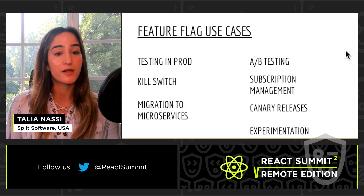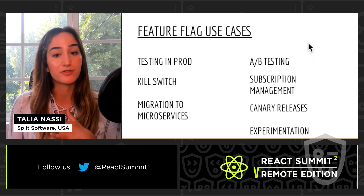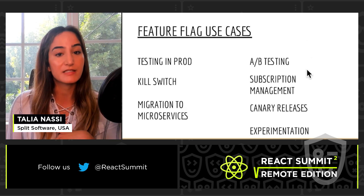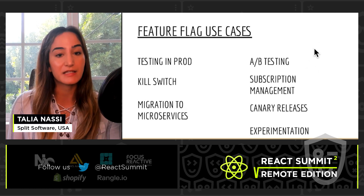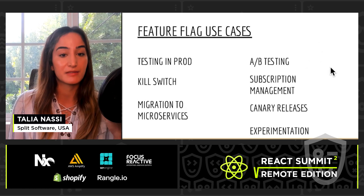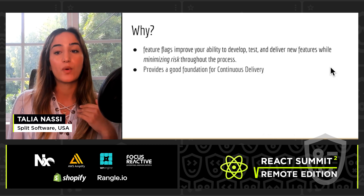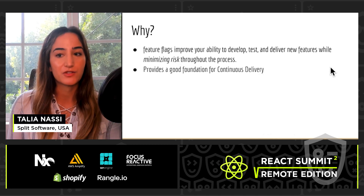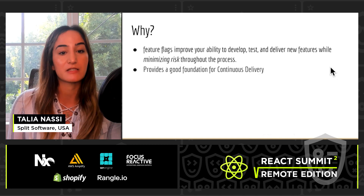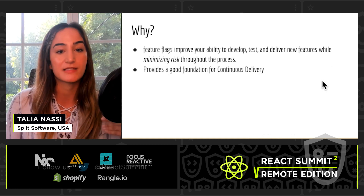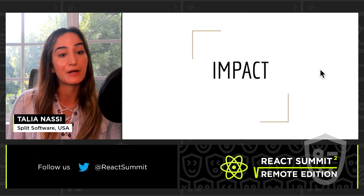If you have a monolith, you can use this to migrate to microservices, and then you can use this for A/B testing, subscription management, canary releases, and experimentation. Why do we care about these use cases? It's because feature flags improve your ability to develop, test, and deliver new features while minimizing risk throughout the process.